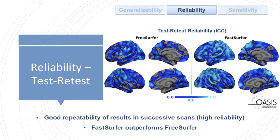In the second analysis, we use the OASIS-1 test-retest component to calculate the intraclass correlation coefficient (ICC), which is an estimate of agreement between results of scans with minimal anatomical variation. FastSurfer yields larger areas with higher ICC — light blue values — compared to FreeSurfer. FastSurfer is highly reliable with close agreement between cortical thickness measurements across the entire cortex, with basically the entire cortex above 0.8.